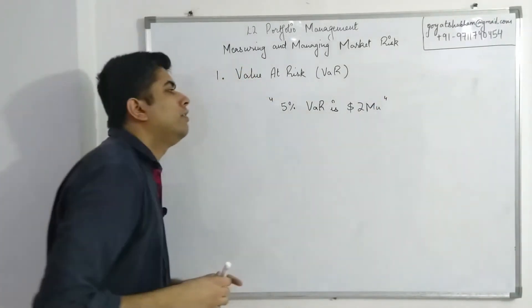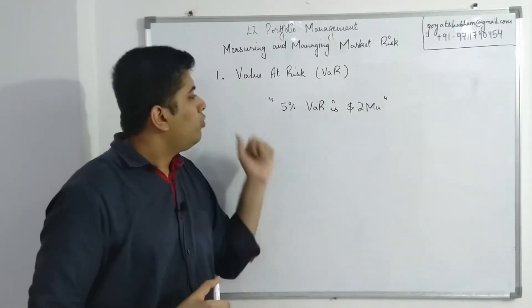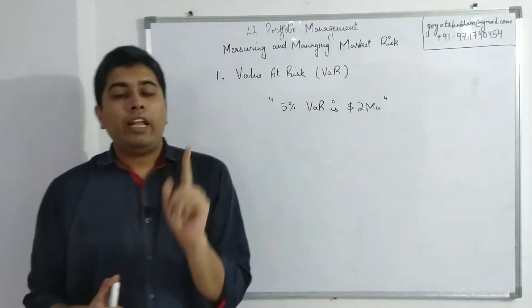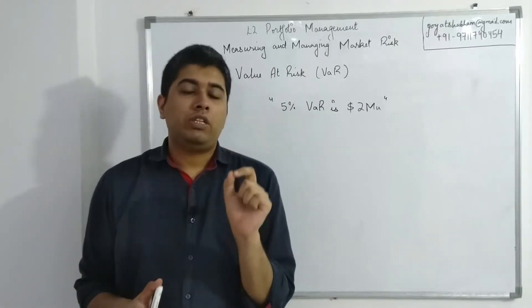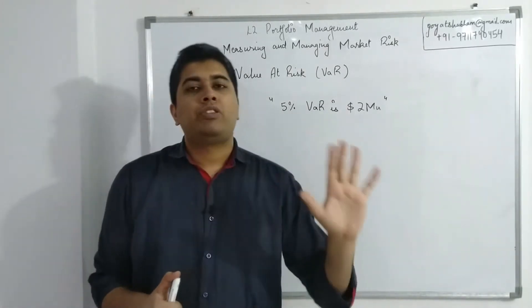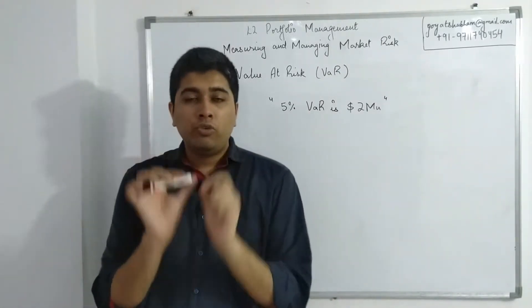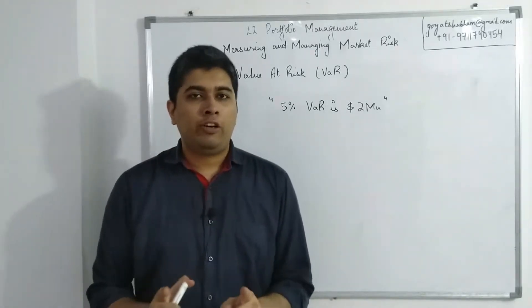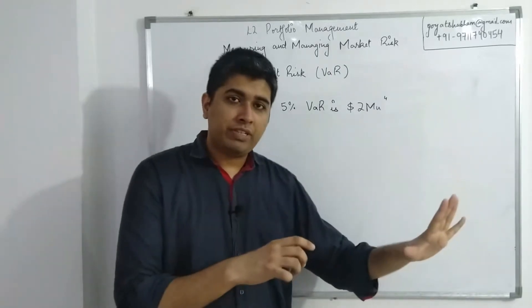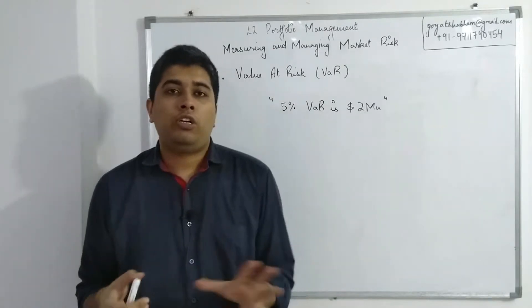This is how normally VAR is stated whenever it is defined. Now, what exactly does this mean? Well, VAR by definition tells you the least amount of loss, the minimum loss that you will have in a certain percentage of cases. So this statement means that you will have a loss of at least two million dollars five percent of the time. Ninety-five percent of the time you will not have a loss of two million dollars or more; you will have relatively profits or low-loss situations.